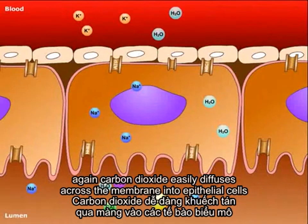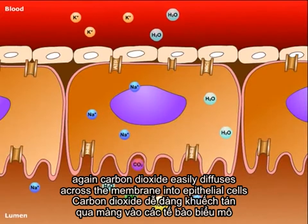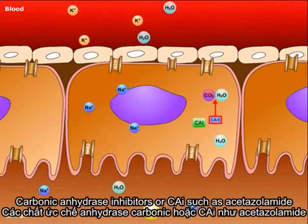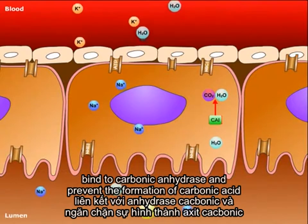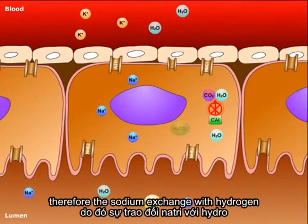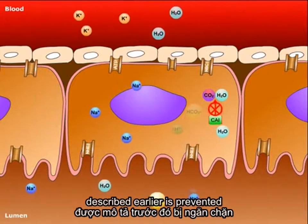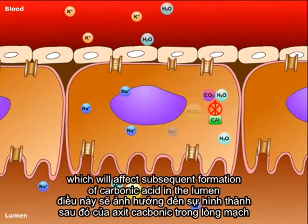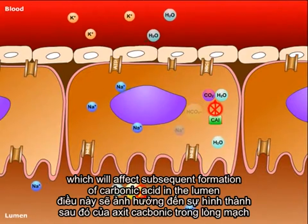Carbon dioxide easily diffuses across the membrane into epithelial cells to bind water with the help of carbonic anhydrase 2. Carbonic anhydrase inhibitors, or CAI, such as acetazolamide, bind to carbonic anhydrase and prevent the formation of carbonic acid. Therefore, the sodium exchange with hydrogen, described earlier, is prevented, which will affect subsequent formation of carbonic acid in the lumen.